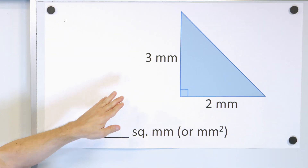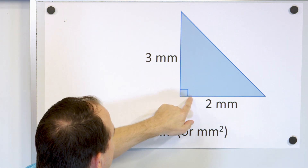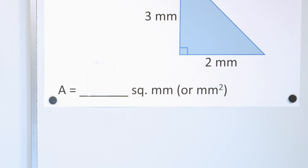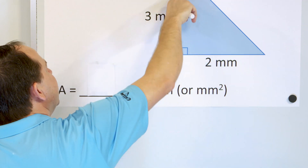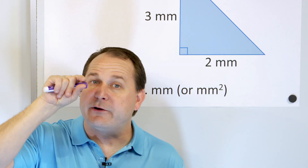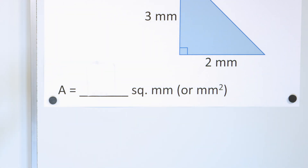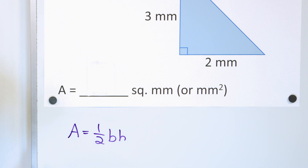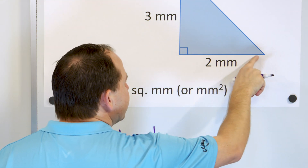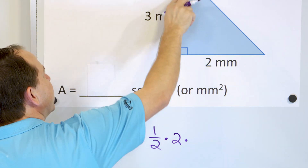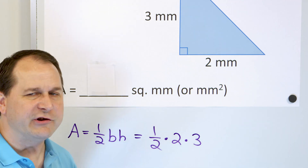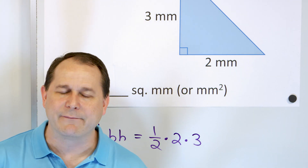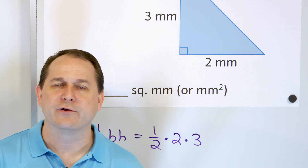Now we can apply that to our first example. We have a right triangle with a base of two millimeters and a height of three millimeters — quite a small triangle since a millimeter is a really small unit. The area has to be one-half times the base times the height. So it's one-half times two — the base — times three — the height. What I typically do is multiply two times three first and then multiply by one-half, but order of operations tells you to start at the left and work right. You'll get the same answer either way.